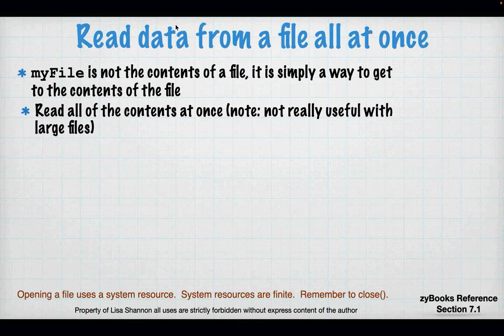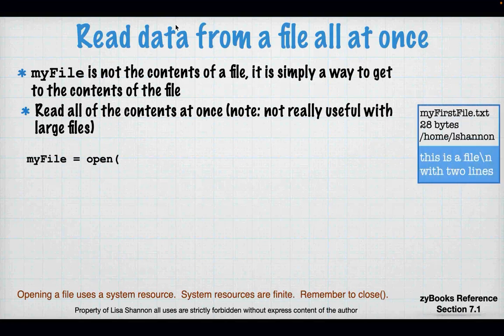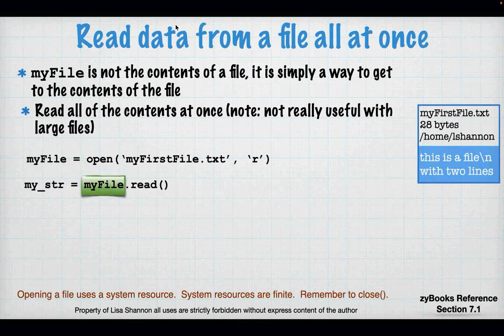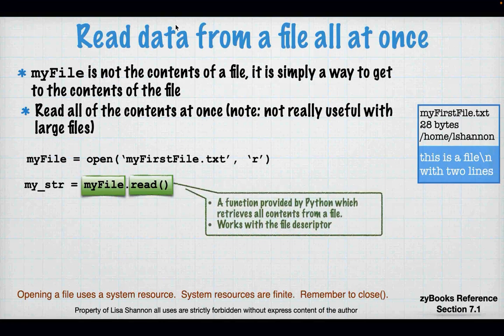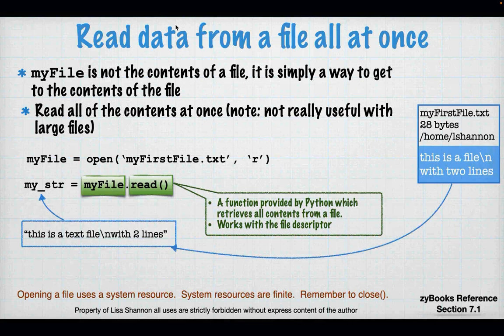Reading data from a file all at once: remember that my file variable is not the contents of the file — it is simply a way to get to the contents. So how do I read the contents? With the read function. I'm going to open my first file.txt. I'm going to read the data from that file. My string variable is going to get from the file descriptor the data. This is a text file with a newline character with two lines. When Python pulls anything in externally, except if you're using a binary file, it's a string until you tell Python it's not. That's what read does — it actually gets the contents of the file, whatever is in that file.